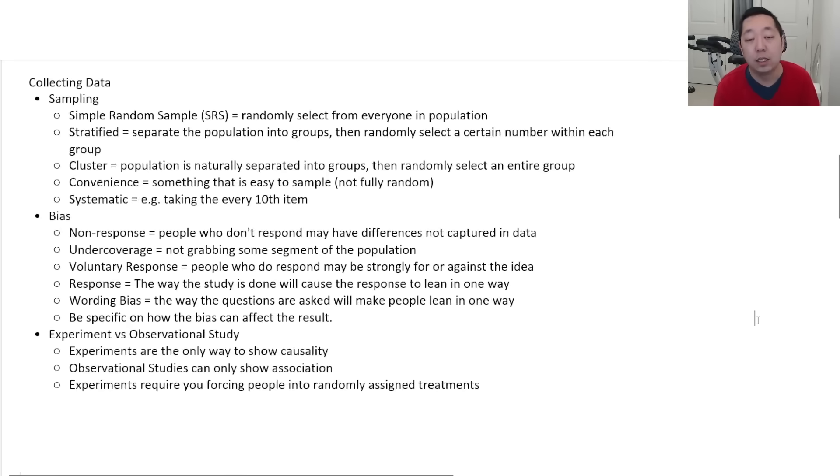Collecting data. So here is where we talk about sampling and bias and how we do experiments versus observational studies. The different methods of sampling: you've got simple random sample, that's where you just take everyone and you randomly pick from the entire population. Stratified, where you're grouping them into groups first and then picking from within the group.